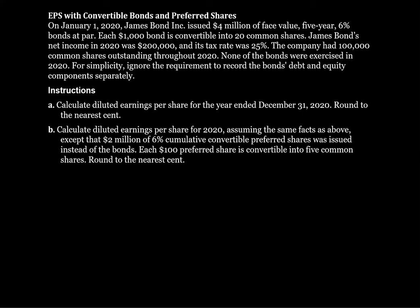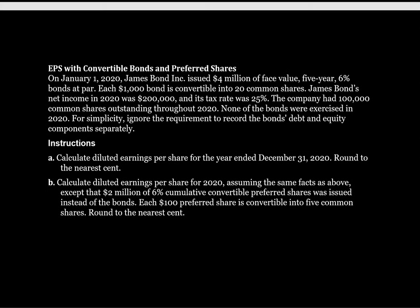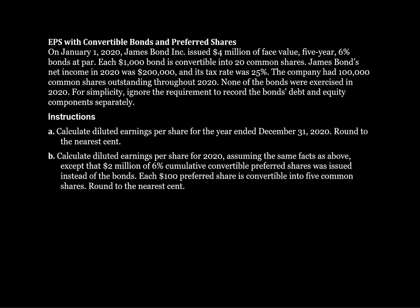This question will walk through the calculation of diluted earnings per share. On January 1, 2020, James Bond Inc. issued $4 million of face value 5-year 6% bonds at par. Each $1,000 bond is convertible into 20 common shares. James Bond's net income in 2020 was $200,000 and its tax rate was 25%. The company had 100,000 common shares outstanding throughout 2020. None of the bonds were exercised in 2020. For simplicity, ignore the requirement to record the bonds' debt and equity components separately.